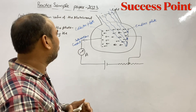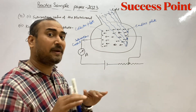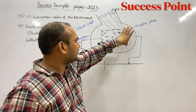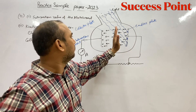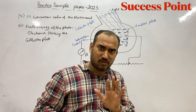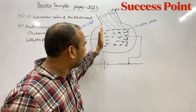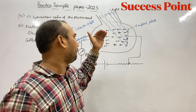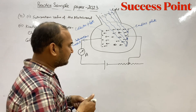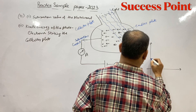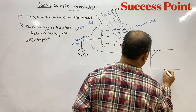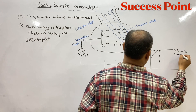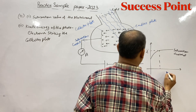बात यहाँ पर यह है कि जब saturation current हो रही होगी — saturation current में maximum current होती है — जैसे कि एक second में अगर इस plate से 1000 electrons निकलें तो उसमें एक second में 1000 electrons ही पहुँच जाएं। इसको saturation current कहते हैं। इस situation में कितना भी voltage बढ़ा दो, current नहीं बढ़ती। एक voltage ऐसा आता है जिस पर current maximum हो जाती है — इसी को saturation current कहते हैं।